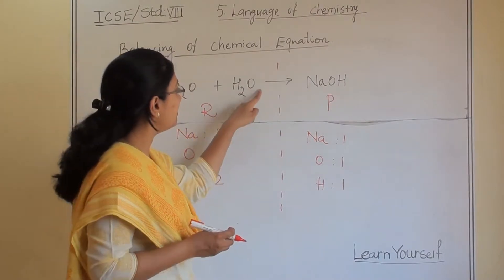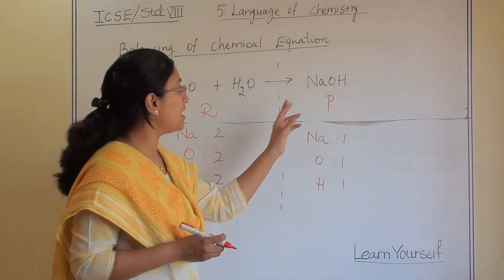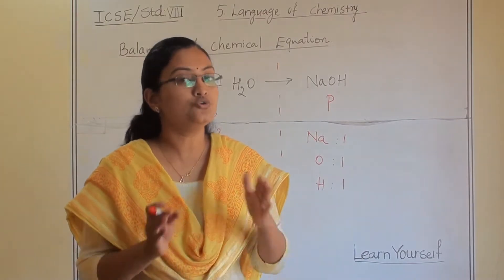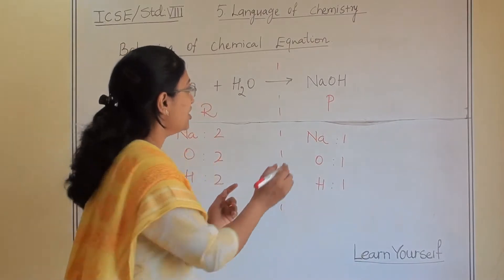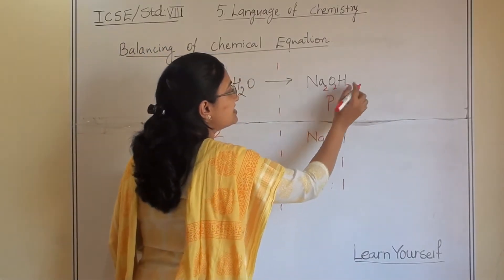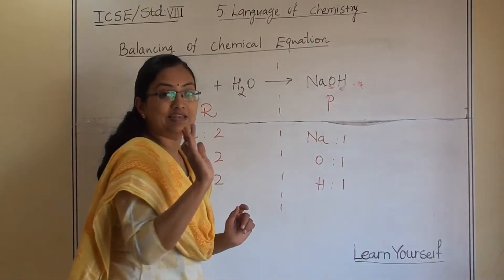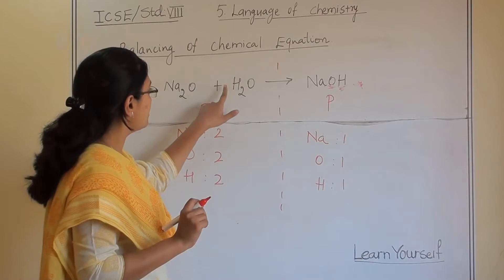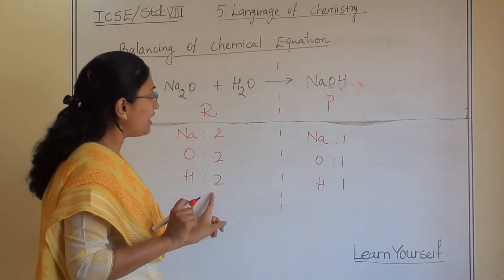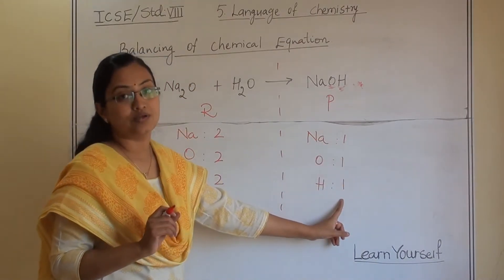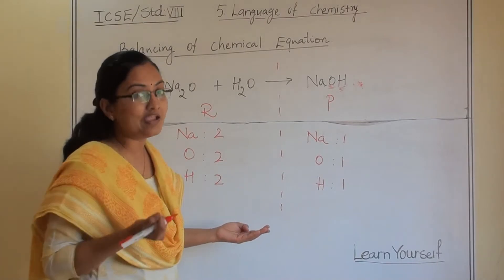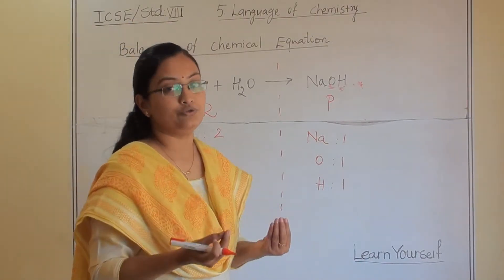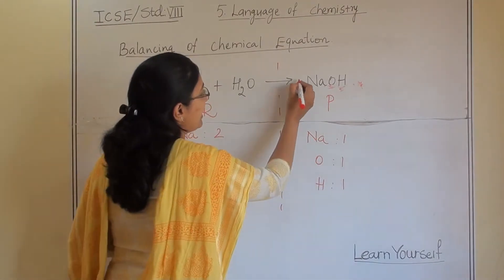You cannot change the subscript. Always write the coefficient at the front, because you are adding a molecule, not a particular atom. So writing subscript 2s inside the formula is wrong — you cannot balance an equation that way. Whenever you are balancing, you write a number in front of the formula. Since all reactant atoms are two and all product atoms are one, you can only add a molecule — you cannot remove one.